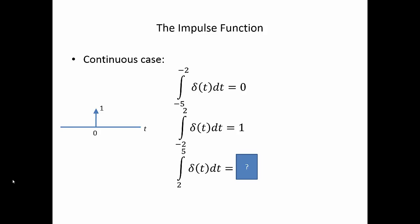When we integrate from 2 to 5, we're again integrating just places where the amplitude is 0. So therefore our area will also be 0.